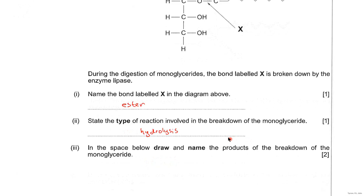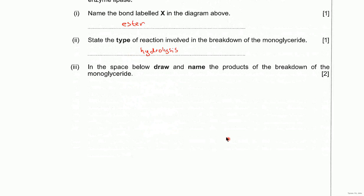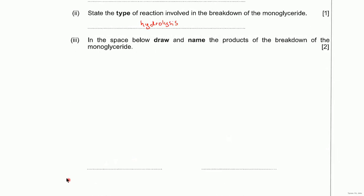So, in the space below, draw and name the products of the breakdown of the monoglyceride. Okay, so the first one would be glycerol. That's going to have three carbons to it. You're going to have three OH groups there, and the rest will be hydrogen. Okay, so that's the glycerol.